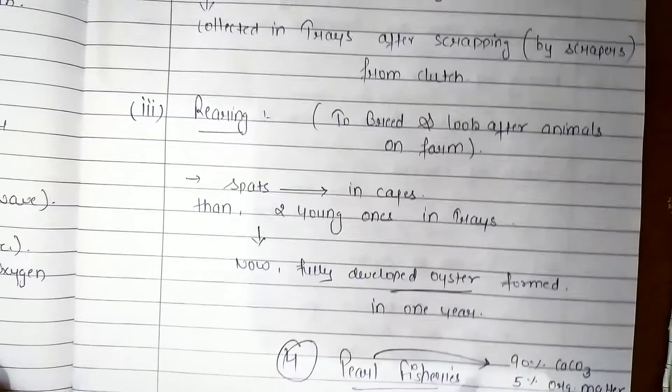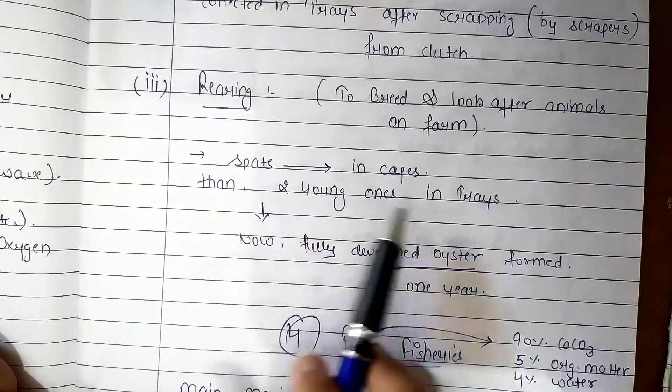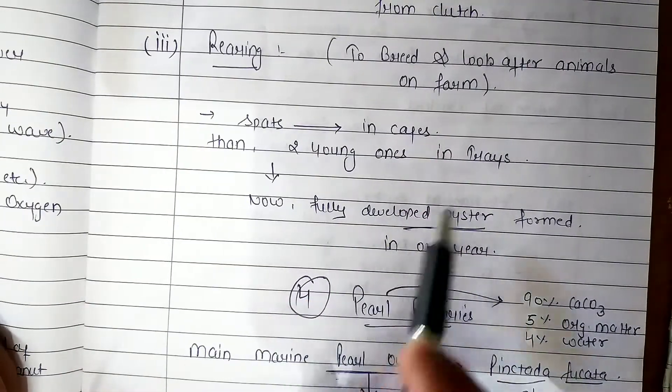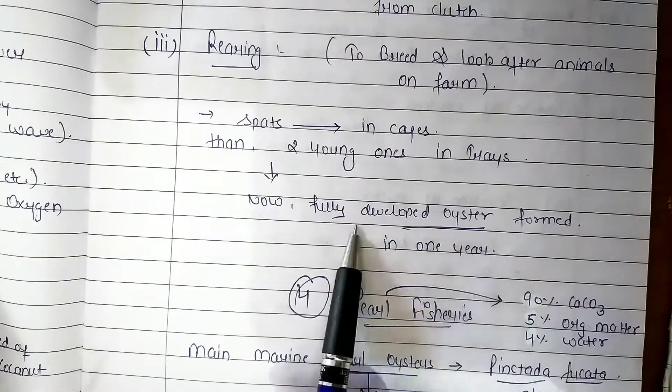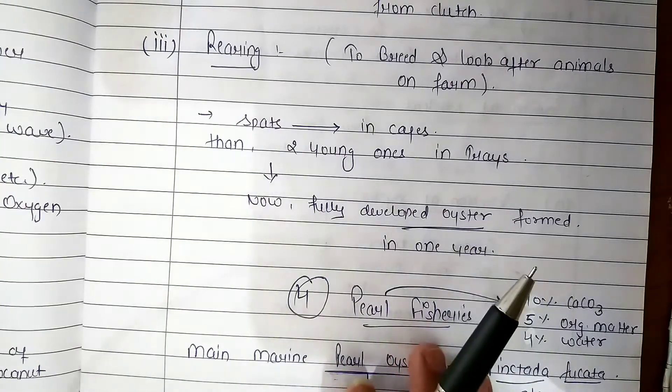Next process is rearing, which we look after. Here we put the spats in small cages, give a small trim and transfer. After one year, we get a fully developed oyster. This is a small process of mollusc culture.